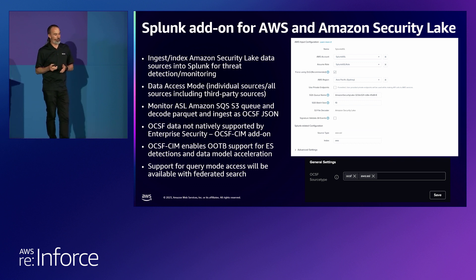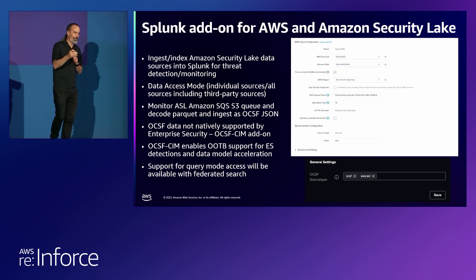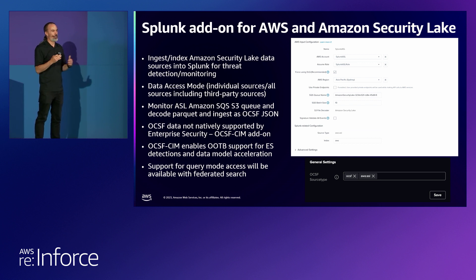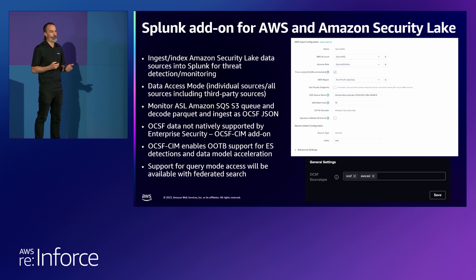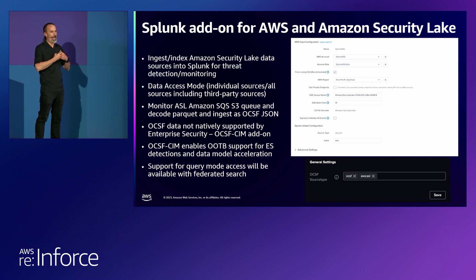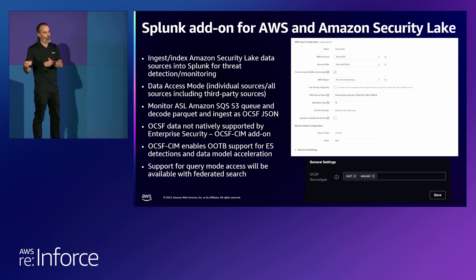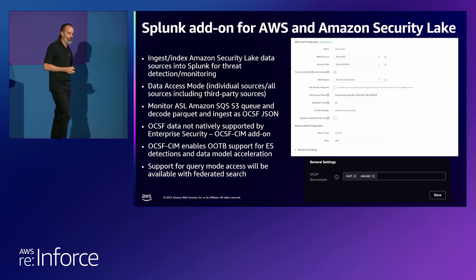Going beyond that, the next stage of integration to be released in the coming months is the ability to support query mode access to data stored in Amazon Security Lake. One use case is to ingest and index data natively in Splunk. The second mode is for when we don't want to ingest certain kinds of data — for example, VPC Flow Logs, which aren't often needed for threat detection but may be needed for investigations. We will release support to run ad hoc searches from within Splunk to Security Lake data using federated search for S3 against that external data store.